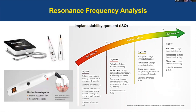Usually in the market we have two types of resonance frequency devices, like an Osstell or a Penguin. What we do is place the implant, add pegs, connect the pegs to the implant, and use the device to measure stability. When we have a score of about 70, we consider the implant stable. We measure primary stability at the moment of placement, and around four months after to measure secondary stability to determine if the implant is ready for restoration. The score goes from 1 to 100, and a stable implant typically scores 70 to 80-something.